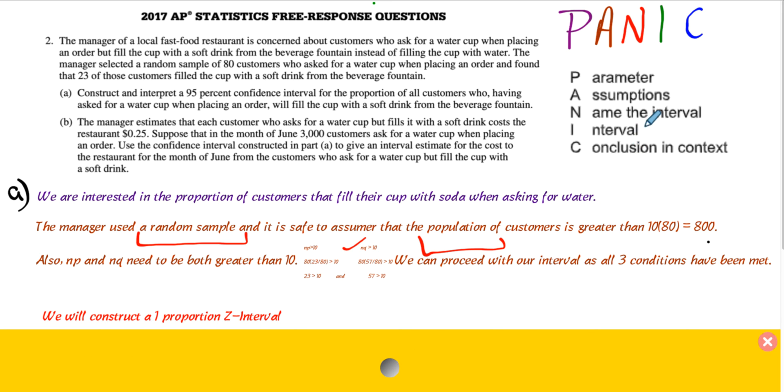We have to name the type of interval. This is a one proportion Z interval. Easy enough. You can write the formula if you want, but most of the time we just use the name of it.